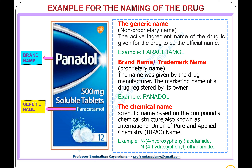Example of drug naming: the generic name, known as the non-proprietary name, is the active ingredient name of the drug given as the official name — example: paracetamol. The brand name or trademark name, known as the proprietary name, is given by the drug manufacturer as the marketing name registered by its owner — example: Panadol. The chemical name is the scientific name based on the compound's chemical structure, also known as the IUPAC name — example: N-(4-hydroxyphenyl)acetamide, or N-(4-hydroxyphenyl)ethanamide.